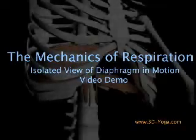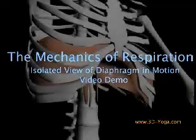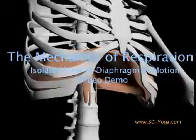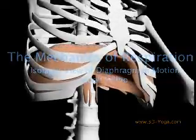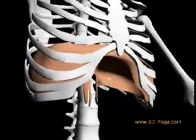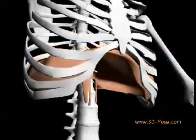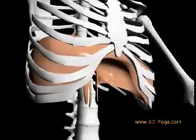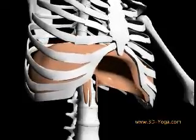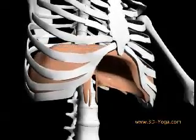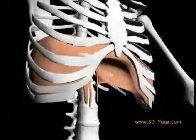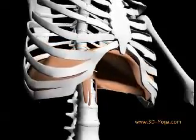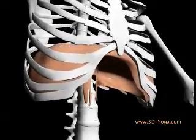The primary muscle of respiration is the diaphragm. The diaphragm is a thin, dome-shaped layer of muscle and tendon that separates the abdominal cavity from the chest cavity. It gains its shape from its attachments and from the organs that surround it, especially the heart, lungs, and liver.